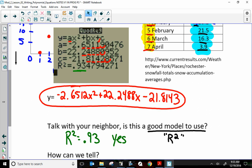Yet, when it comes to determining if an equation is, you know, a good fit, this r squared just has to be somewhat close to 1. So, .93 is close to 1. So, yes, it's a good model to use.